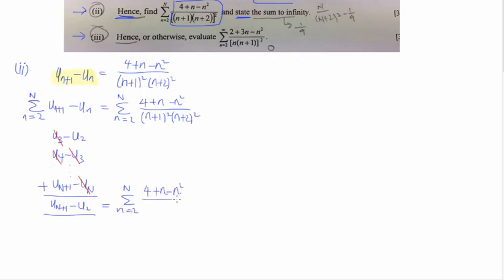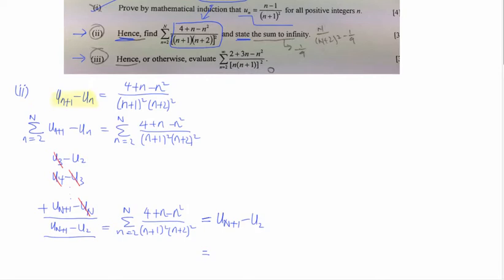Now, you realize you haven't used the previous induction answer yet — but this is a 'hence' question. You're going to use it now because you need to work out u_(N+1) − u₂. This answer must come from the induction we proved in part 1. So u_n equals that expression, meaning u_(N+1) is obtained by substituting n as N+1, giving (N+1−1) / (N+1+1)² = N / (N+2)². And u₂ = (2−1) / 3² = 1/9. So the answer is N/(N+2)² − 1/9.